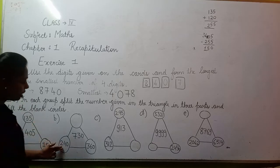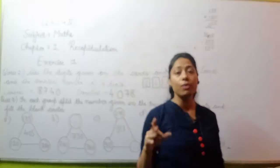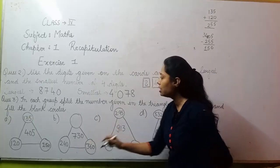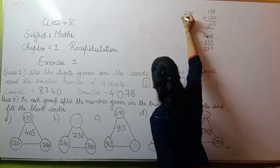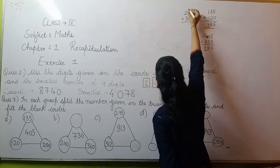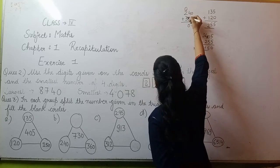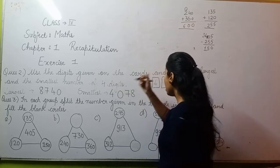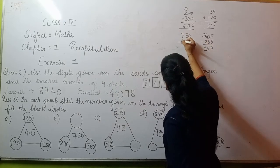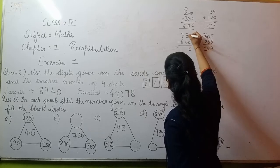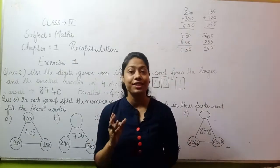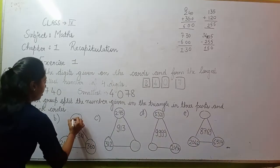Moving to part B of the question, you have 2 circles given. Add the values in the 2 circles and subtract from the triangle value. 240 plus 360: 0 plus 0 is 0, 4 plus 6 is 10, carry forward 1 and write 0, 2 plus 3 is 5 plus 1 is 6, giving 600. Now subtract this from the triangle value: 730 minus 600. 0 minus 0 is 0, 3 minus 0 is 3, 7 minus 6 is 1. So 130 is your answer for part B.